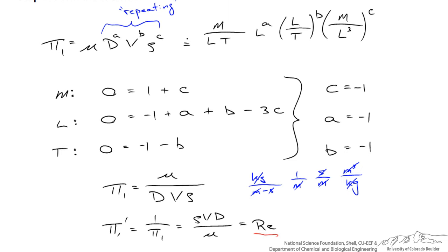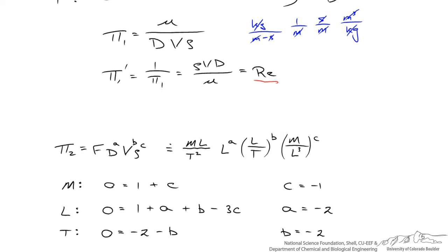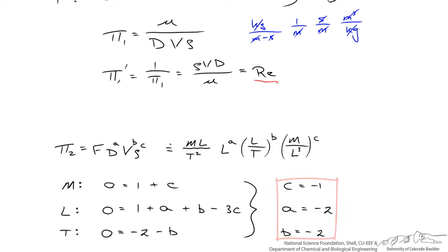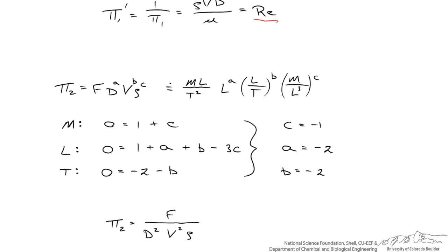To find the second pi term, I do something similar, except instead of using viscosity I now use the force as the non-repeating variable, along with the same three repeating variables d, v, and ρ raised to exponents. The dimensions of force are mass·length per time squared, diameter is length, velocity is length per time, and so on for density. Writing out three algebraic equations and solving: c = −1, a = −2, and b = −2. So pi 2 equals the force divided by diameter squared, velocity squared, multiplied by the density.